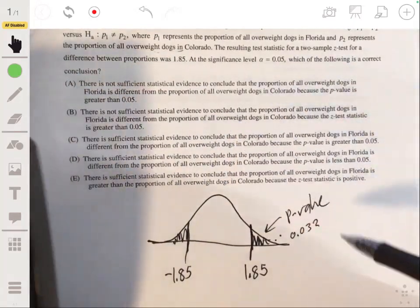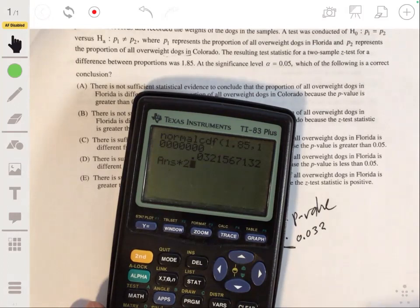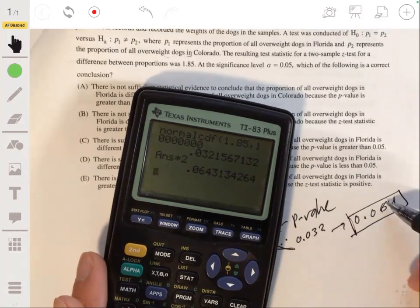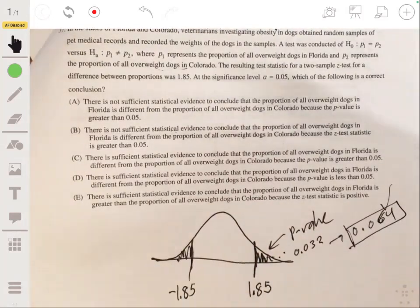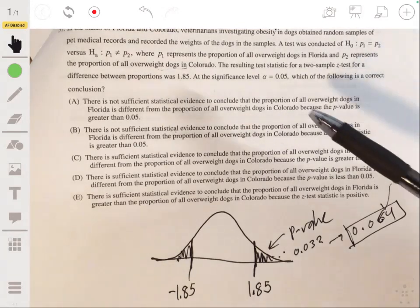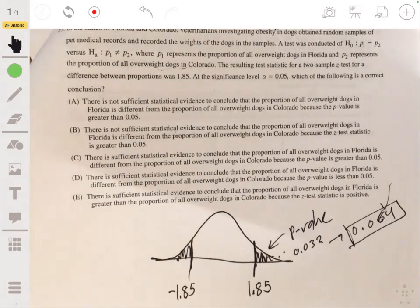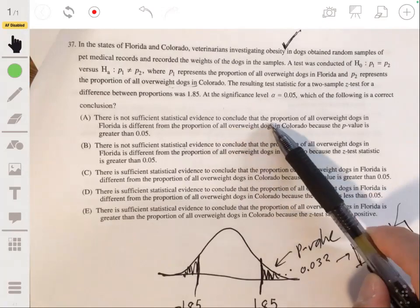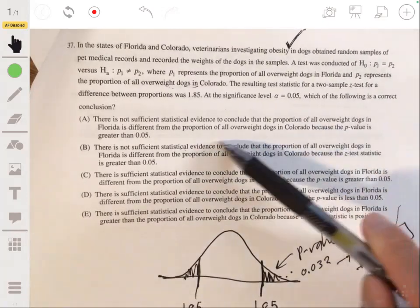Now, if this is a one-sided test, we would reject it. But since it's a two-sided test, we would fail to reject. Actually, we would reject it because our value is less than 0.05. But since it's a two-sided test, we've got to multiply this by 2, and we get a P-value of 0.064. So our P-value is actually greater than our alpha level, 0.05. So then we're going to fail to reject the null hypothesis and basically say we don't have significant evidence to conclude that the proportion of all overweight dogs in Florida is different than the proportion of all overweight dogs in Colorado.